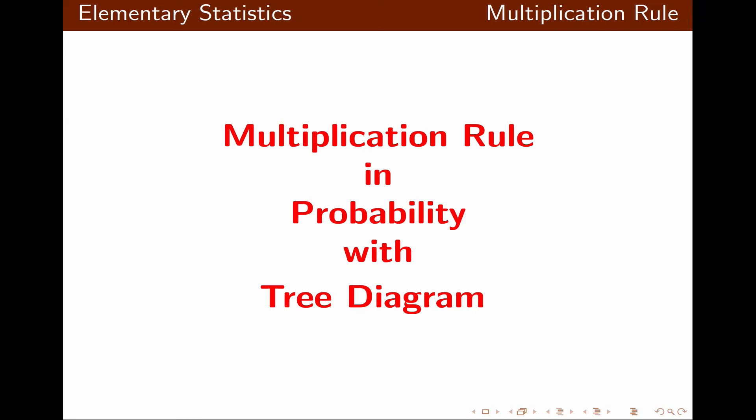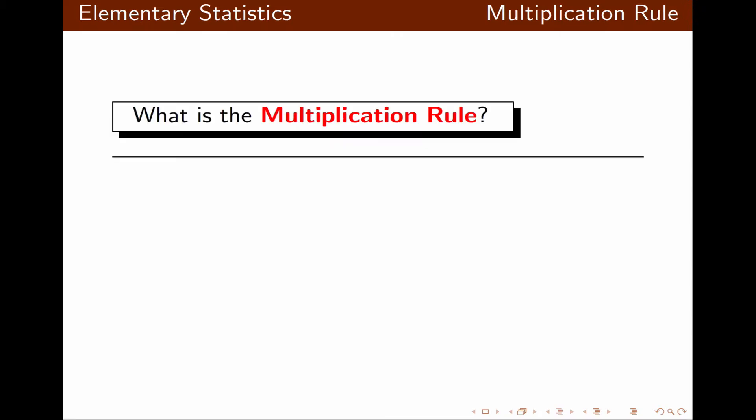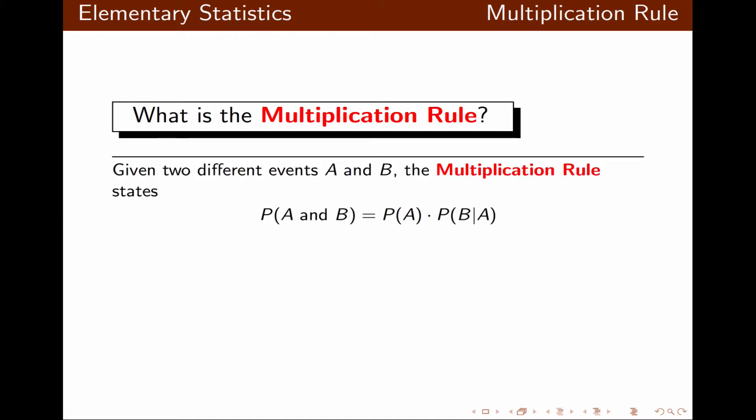In this lecture we're going to talk about multiplication rule in probability with the use of tree diagram. First let's talk about what is multiplication rule. Given two different events A and B, the multiplication rule states that probability of A and B is equal to probability of A times probability of B given A.